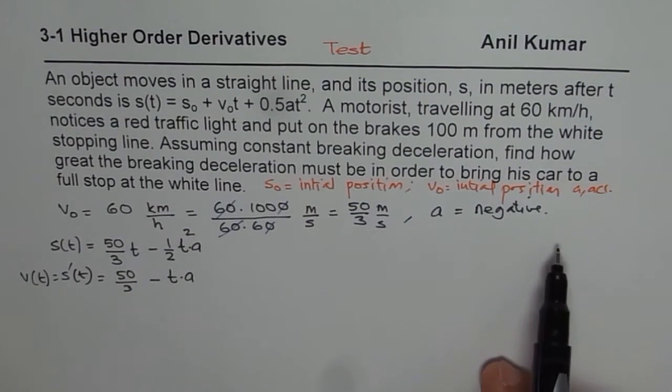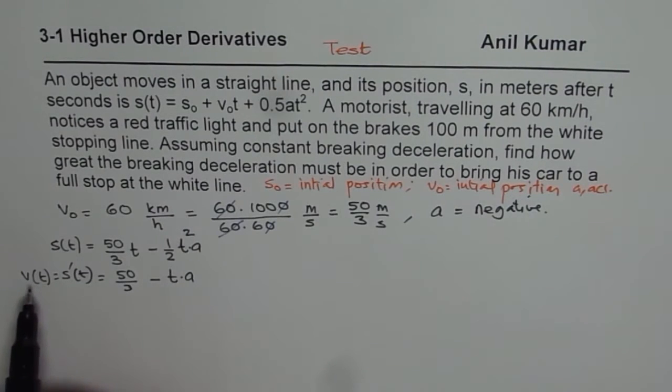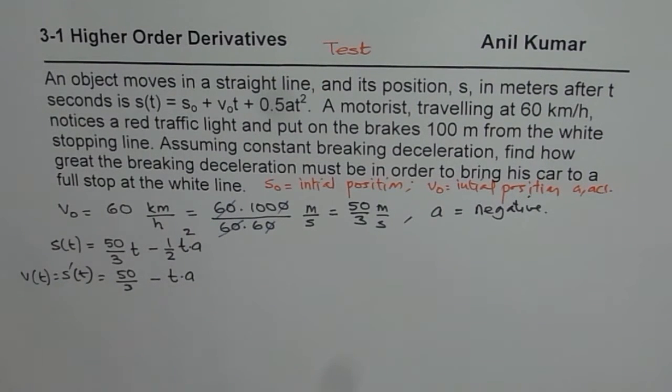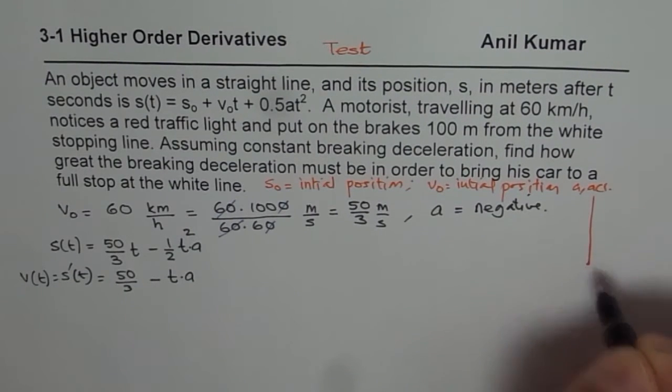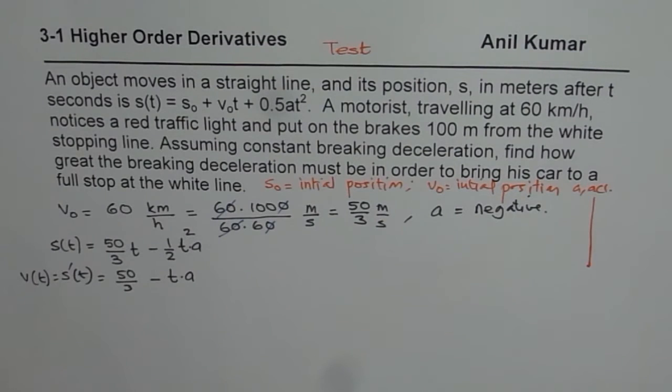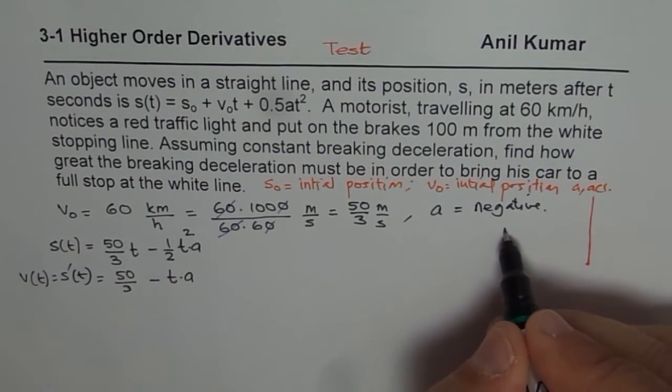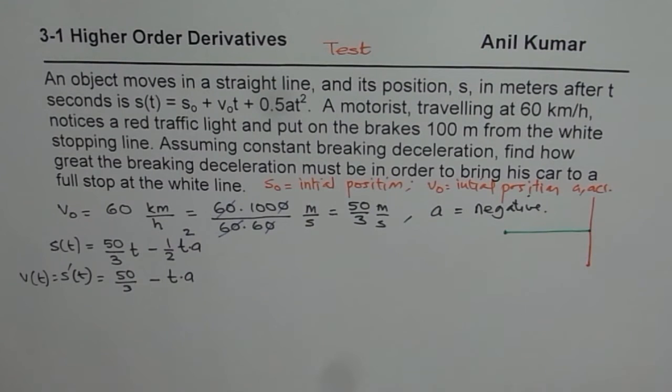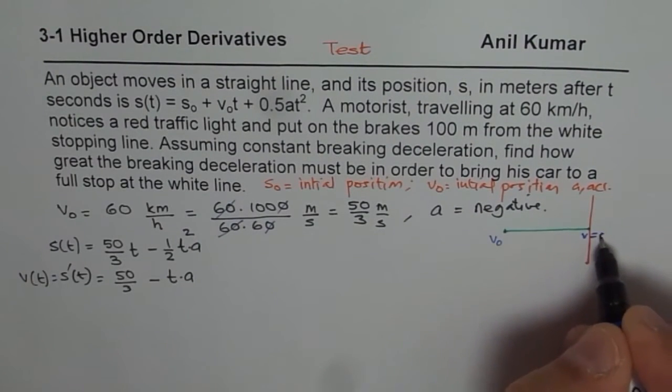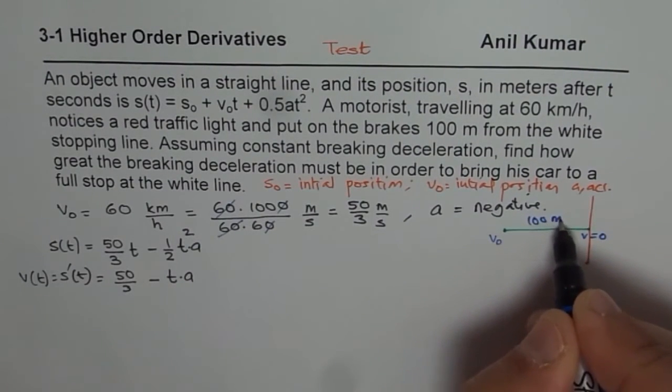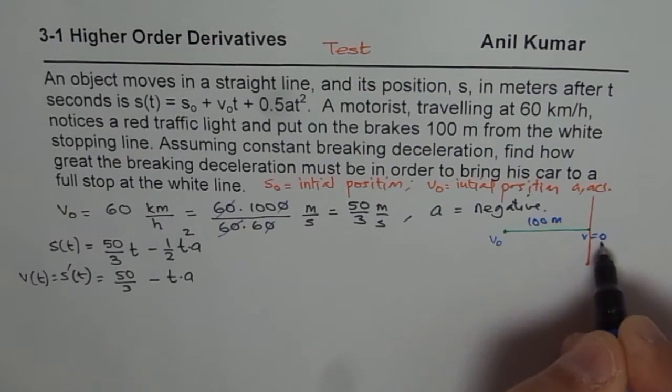Now, when the vehicle comes to rest, at that time, final velocity should be 0. So at rest, see that is the stopping line. It is kind of like this. Now the vehicle is 100 meters away, let us say here, when the brakes are applied. At this time, initial time, we have velocity v₀. Now here, velocity equals 0. This distance is 100 meters. Do you see that? So final velocity is 0 for us.